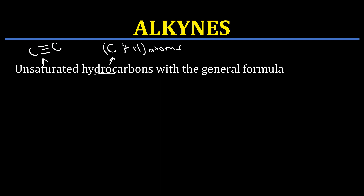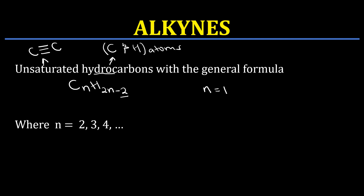We also have a general formula for the alkynes, written as CₙH₂ₙ₋₂. So alkynes are two hydrogen atoms less compared to the alkenes. The value of n will start from two — we don't have n equal to one. It is not possible because we must have a triple bond between at least two carbon atoms, so you can't have a triple bond when you have only one carbon atom.